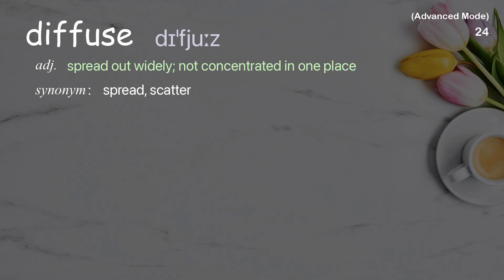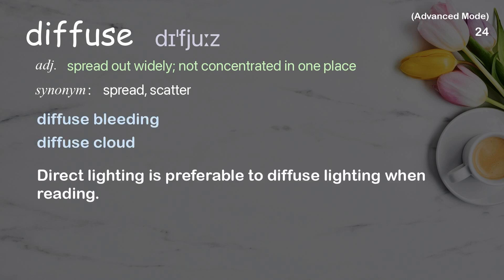Diffuse: spread out widely; not concentrated in one place. Examples: diffuse bleeding, diffuse cloud. Direct lighting is preferable to diffuse lighting when reading.